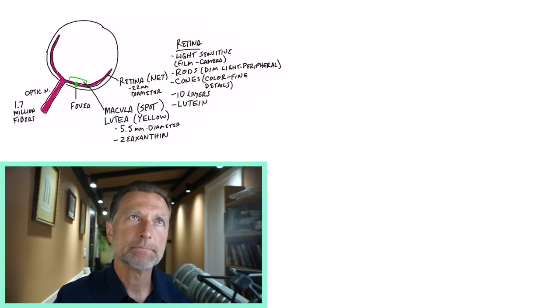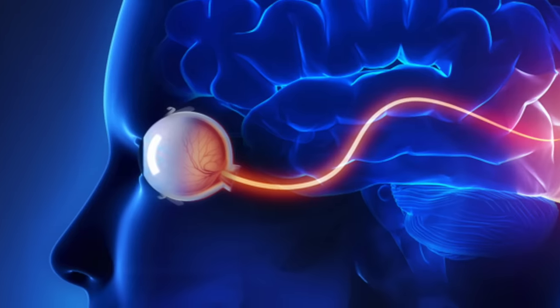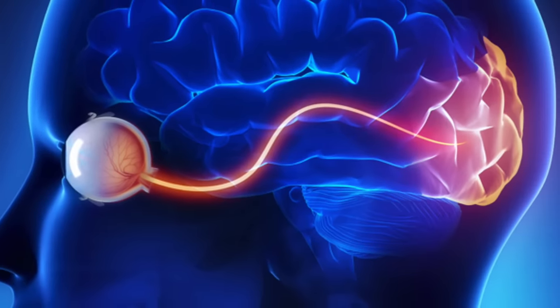The retina is like film in your camera. It has a lot of different receptors. It picks up information and it sends it into the brain via the optic nerve.